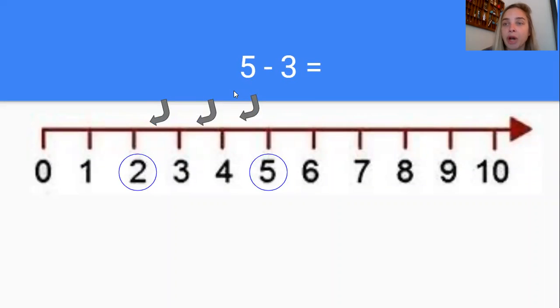Let's read this subtraction sentence together. It says five take away three equals. So remember with subtraction we always start with the bigger number. So we're going to find that bigger number first on our number line. So I circled the bigger number five on my number line and I'm going to take three away. I'm going to count backwards on my number line because it's subtraction and I'm taking away.